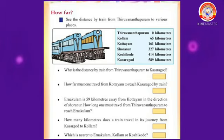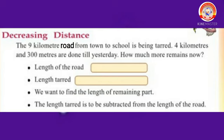Today's first activity is 'Decreasing Distance.' The nine kilometer road from town to school is being tarred. Four kilometers and 300 meters are done till yesterday. How much more remains now? The length of the road is nine kilometers, and the length tarred is four kilometers and 300 meters. We want to find the length of the remaining part.